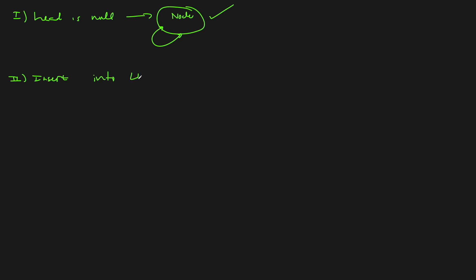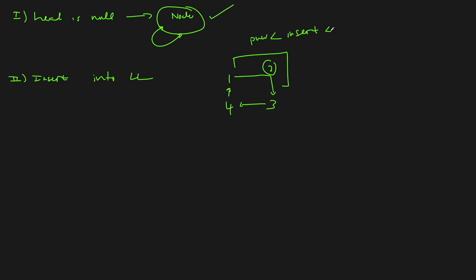The second case is that we insert somewhere inside the linked list. Going back to our example with one, three, and four, we want to insert two. We would insert it basically between one and three. We find the point where the previous value in the linked list is less than the insertion value, and the insertion value is also less than the next value. So if we're at node three, the previous value was one and two can slot in there.